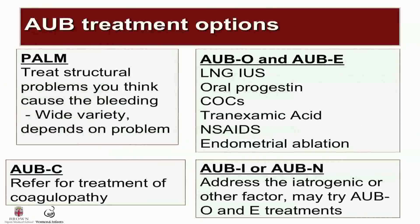Treatment is very dependent on the etiology. We should treat structural causes under the PALM classification that we think are the cause of the abnormal bleeding, keeping in mind that just because a structural abnormality like polyps or fibroids are found doesn't mean they're the cause of the bleeding. For AUB-C, patients should be referred for the treatment of coagulopathy. For AUB-I and AUB-N, clinicians should address the iatrogenic or other factors, but may also consider trying AUB-O and AUB-E treatments.